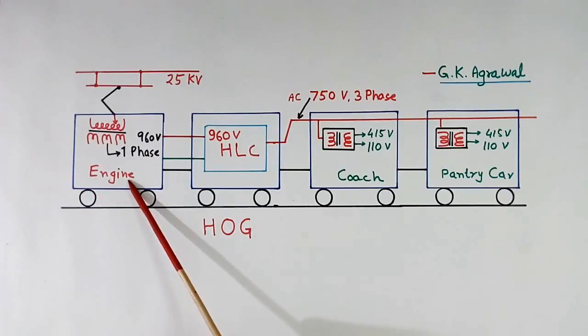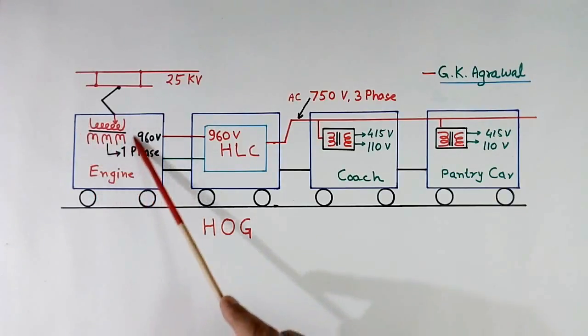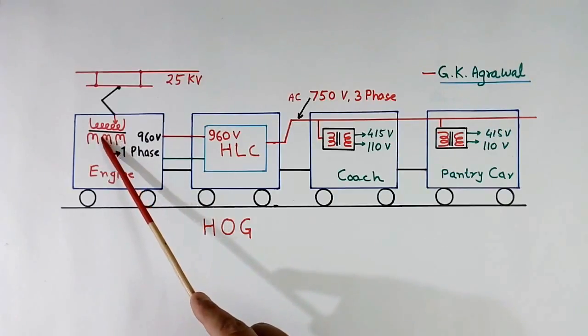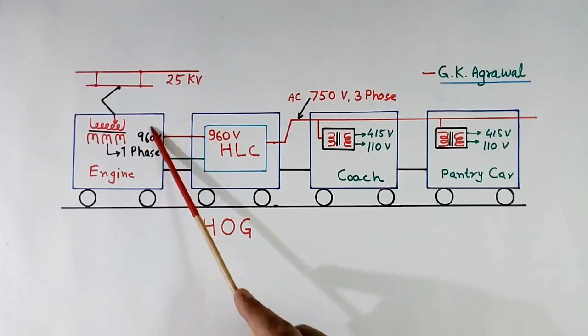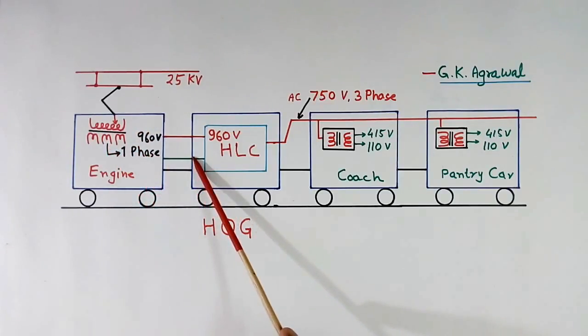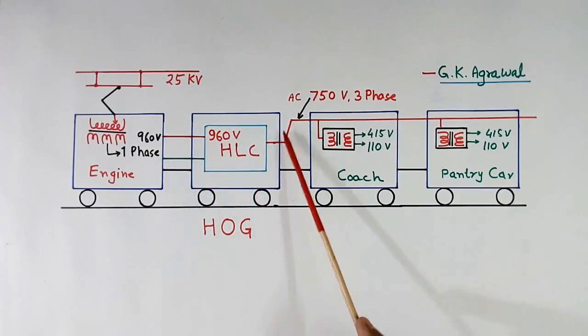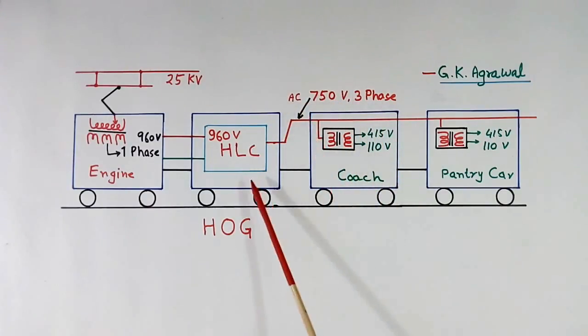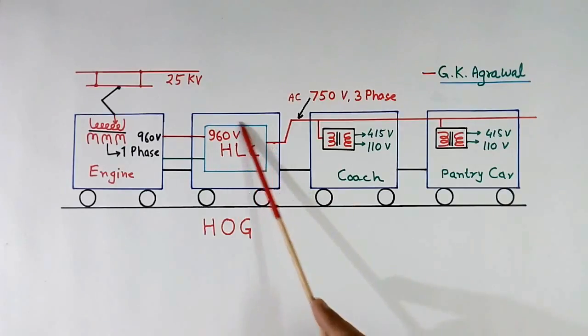This is engine. It has one traction transformer which has many windings. One winding is used for engine. It also has one winding for hotel load converter. That winding is 960 volt single phase. From there we get single phase supply and HLC converts that single phase supply into 750 volt 3 phase AC. Now I will explain you about HLC.